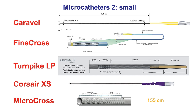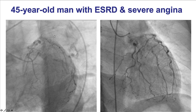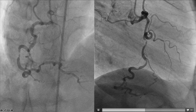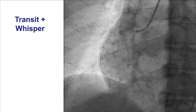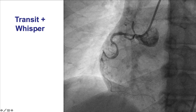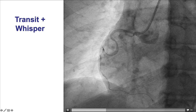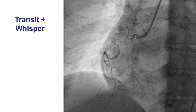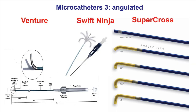The second category — smaller outer diameter microcatheters. Some have similar coil construction to the large ones, such as the Turnpike LP and the Corsair XS; others do not, such as the Caravel and the Finecross. As a result, the Turnpike LP and Corsair XS can be rotated, whereas the others much less so. This is an example of a patient with highly tortuous coronary arteries in whom it was possible to wire an extremely tortuous right coronary artery using a microcatheter together with the Whisper polymer-jacketed wire. Using a microcatheter significantly improves the ability to wire through tortuosity or other complex lesions.